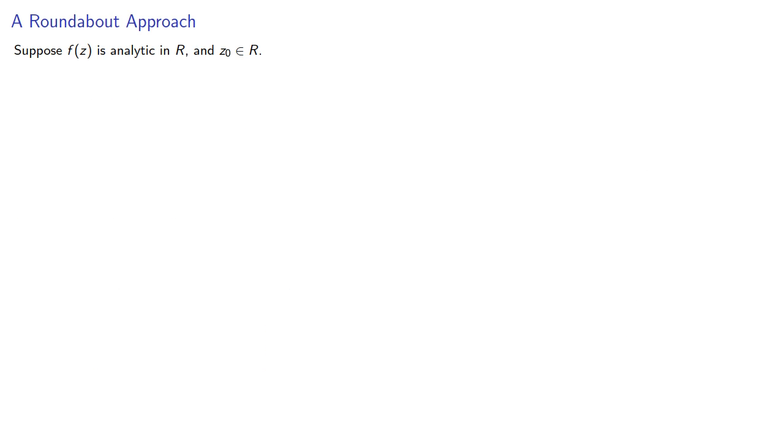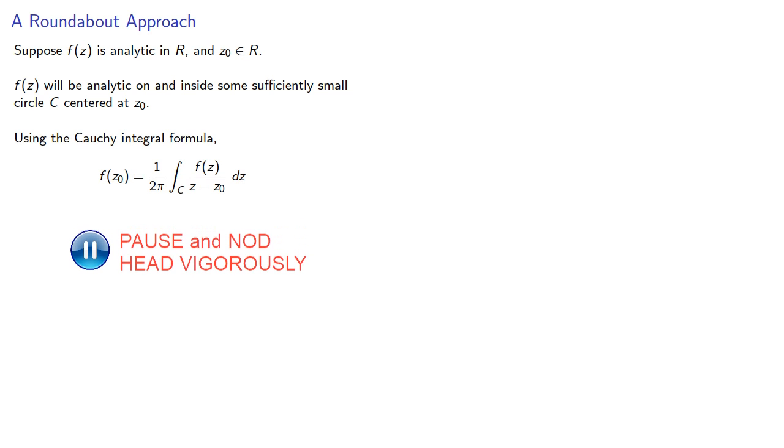So let's see where this takes us. Suppose f of z is analytic in r and z0 is some point in r. f of z will be analytic on and inside some sufficiently small circle centered at z0. So using the Cauchy integral formula, we'll have...